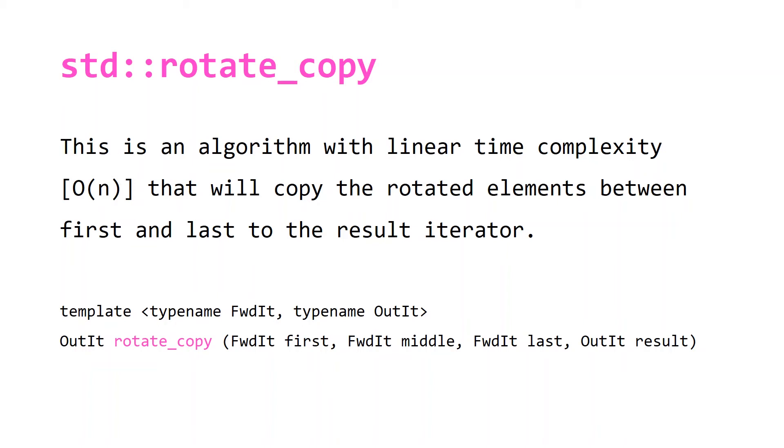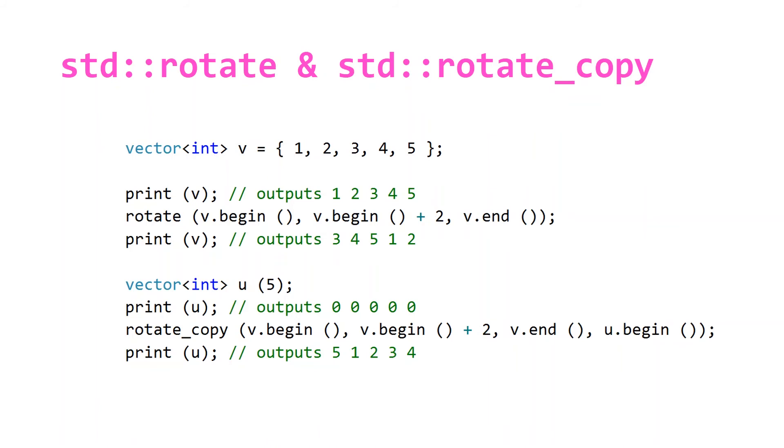Let's take a look at a code example. So once again we're declaring a vector of integers with an initializer list. We output what the initial state is: 1 2 3 4 5. And then we rotate it and we're rotating it around the third element, so begin points to the first, we do a plus 2, and this will give us the third element here.